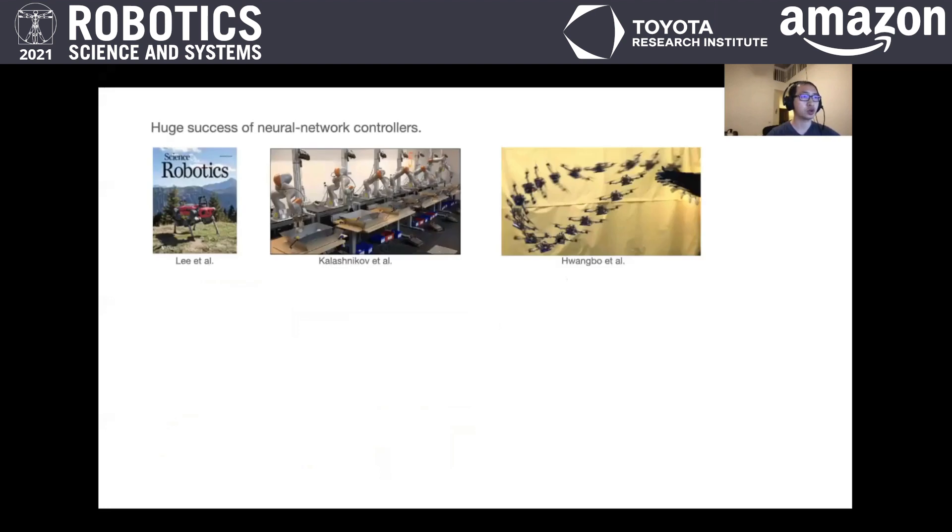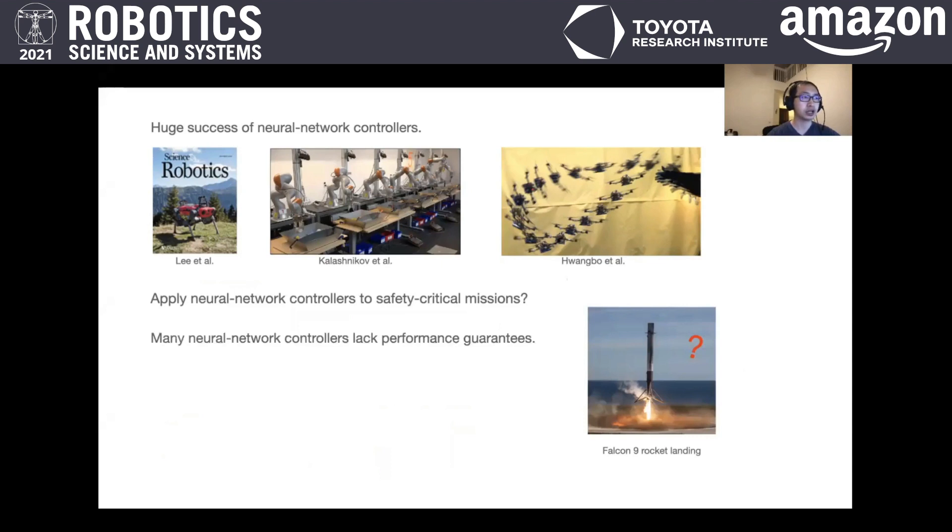In the past few years, we have seen wide application of neural network controllers to different robots. Can we apply neural network controllers to safety-critical missions, such as landing a Falcon 9 rocket on a platform? Probably not, as many of these controllers lack performance guarantees.